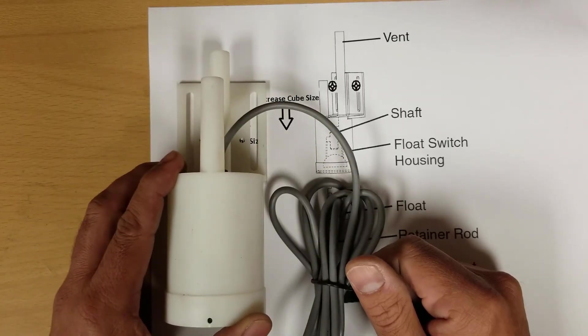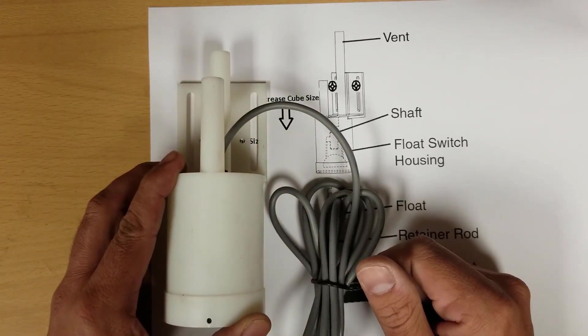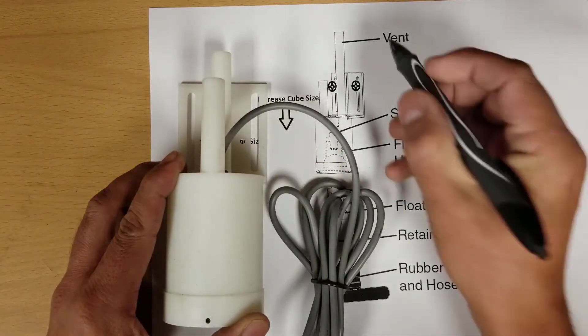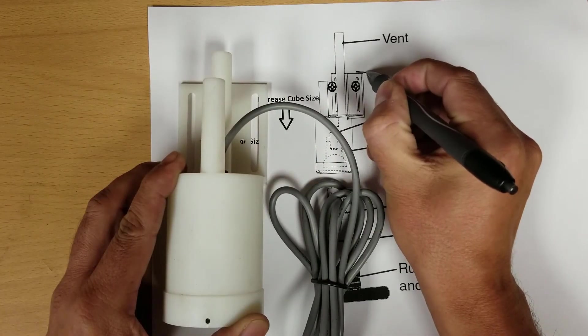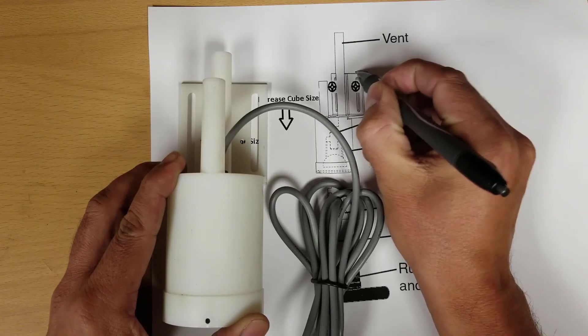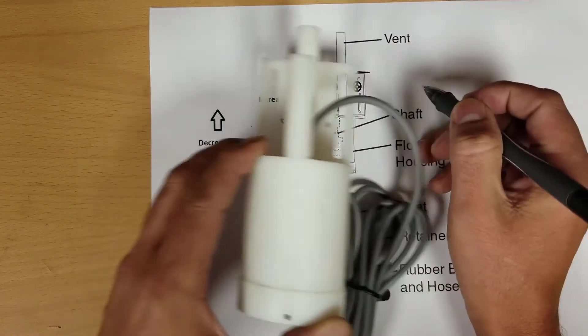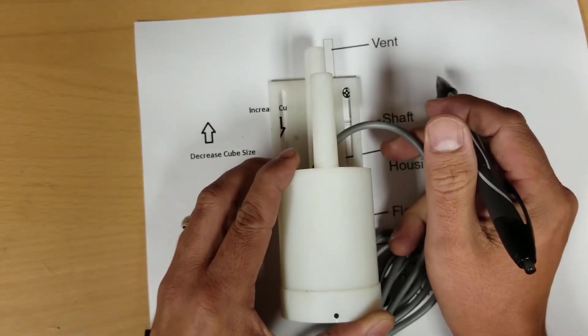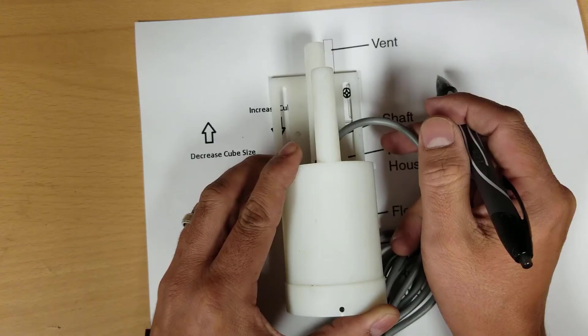If you have to take the float off to do your maintenance and you're okay with the cube size as is, I would mark your point here with a pin or marker and then take off your float. That way when you put it back on later you're not trying to figure out where you took it off at or what level it was at.